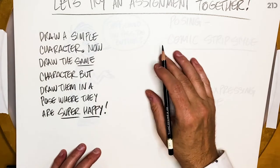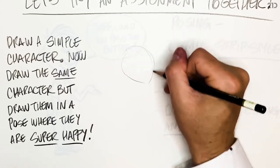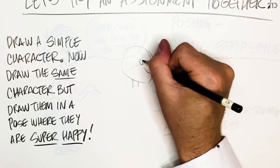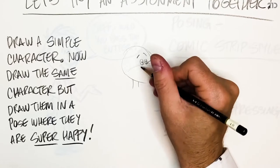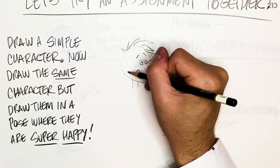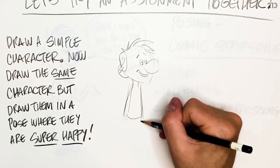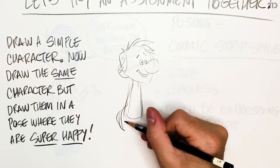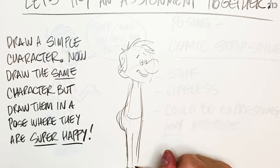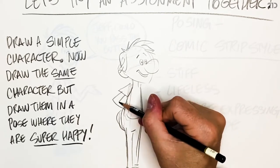Now I'm going to do it myself using that same simple guy I designed earlier. He basically looks like this — he's got a kind of big nose and a simple eye line. This is my neutral pose of what he looks like. He's got a pear-shaped body, a big butt, and his legs taper down to some cuffs. I'm just going to put his hands on his waist.